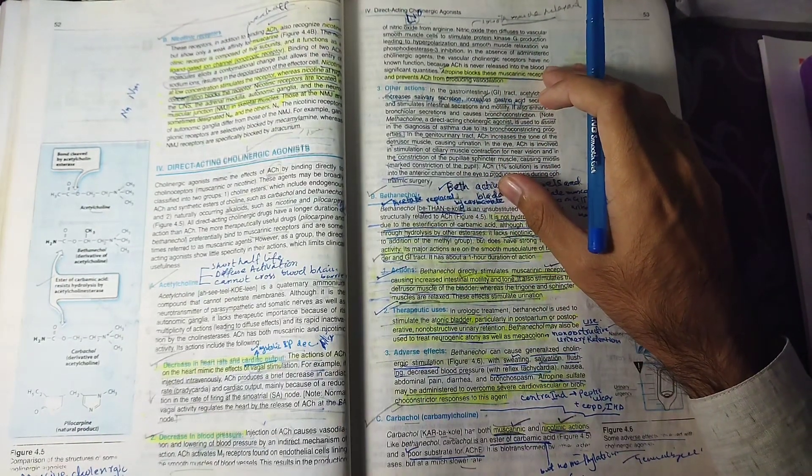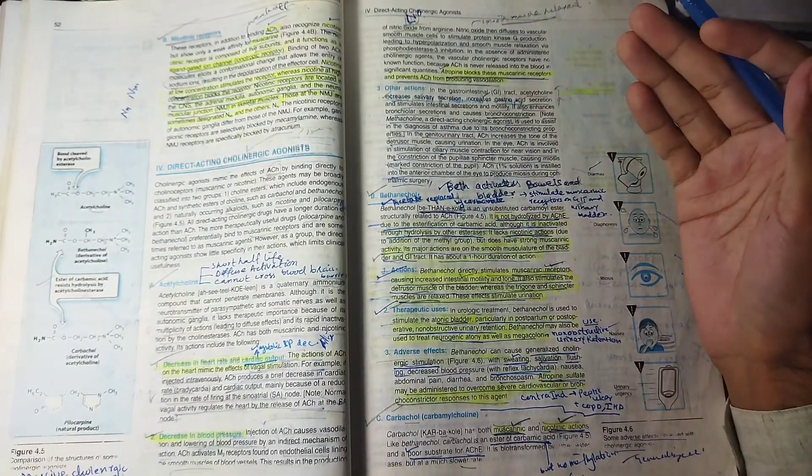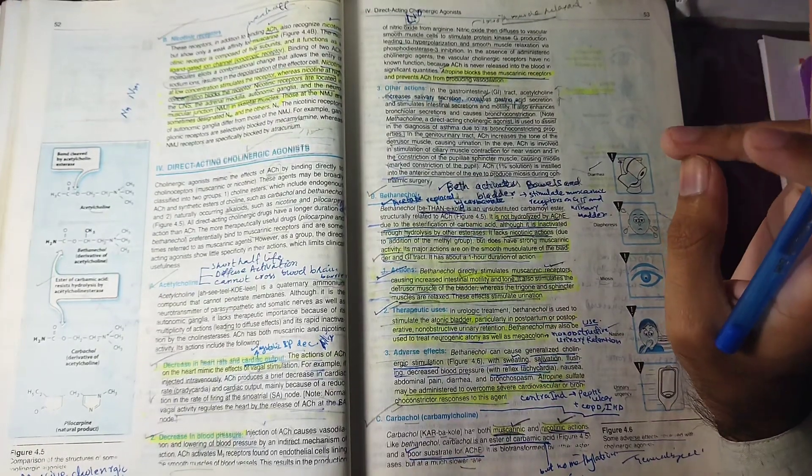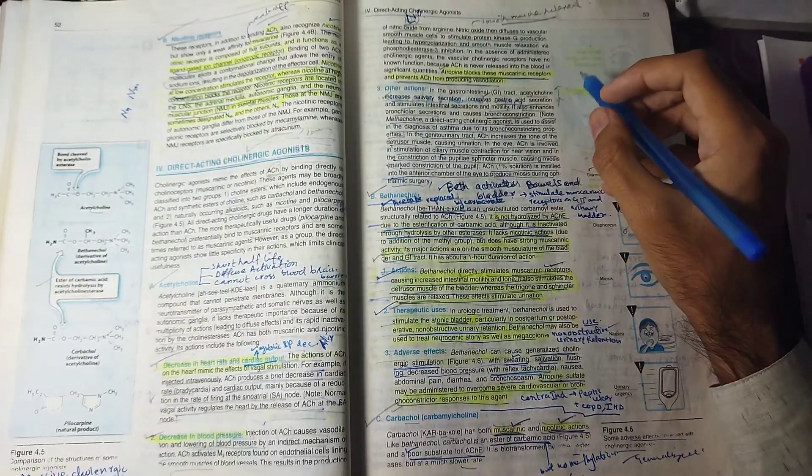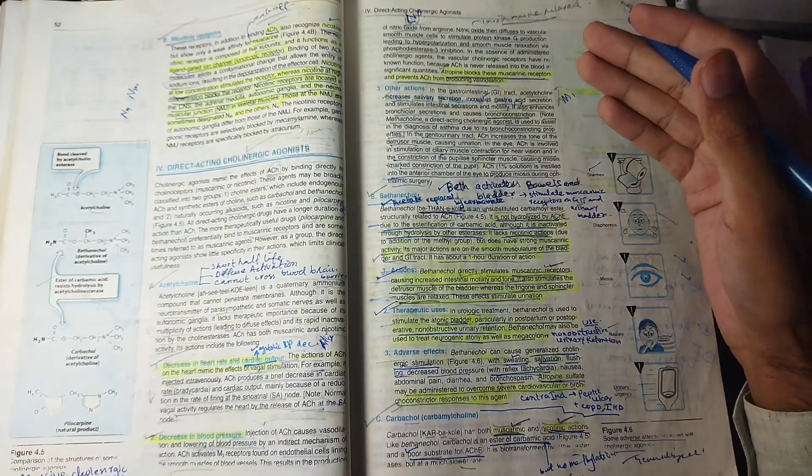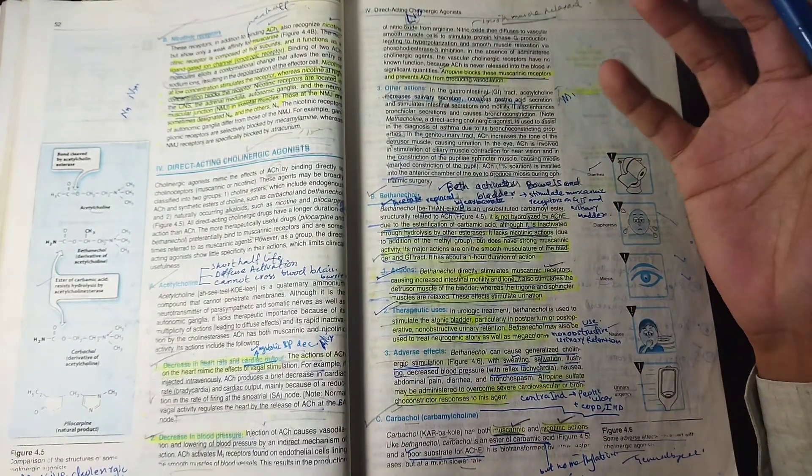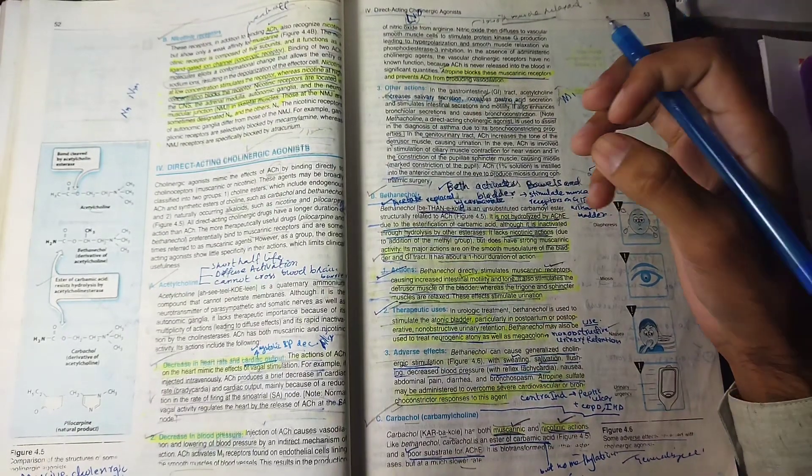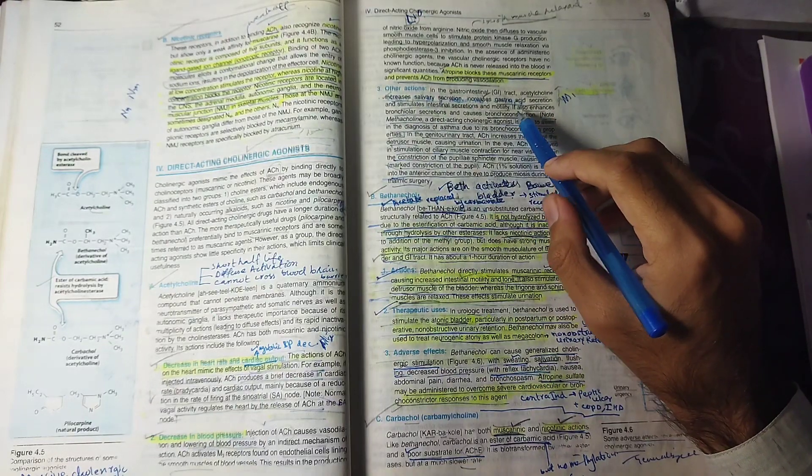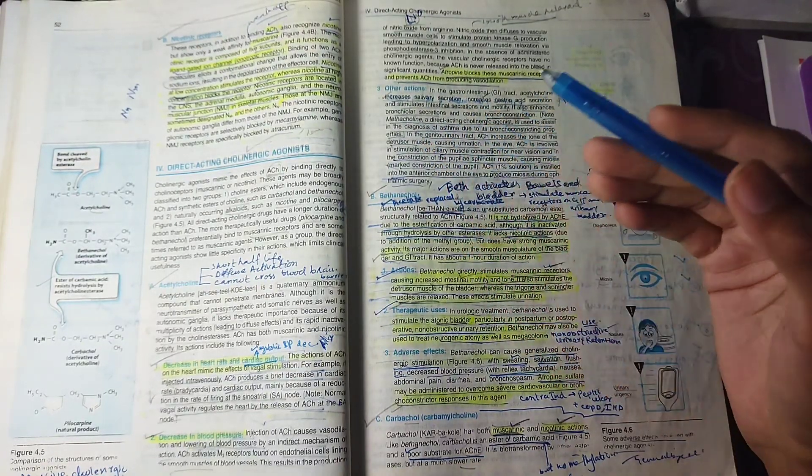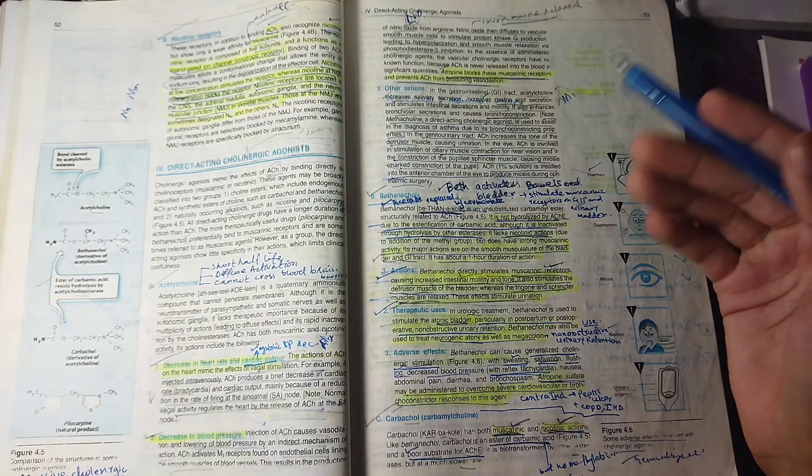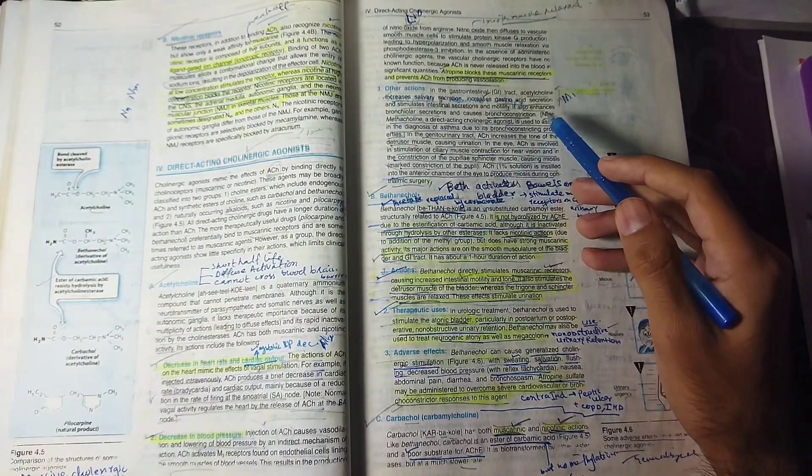After that, other generalizations are described. For example, acetylcholine will increase salivary secretion and gastric secretion. Bronchial secretion will increase. He's giving an example that acetylcholine causes bronchoconstruction, and we use acetylcholine directly to diagnose asthma due to its bronchoconstruction properties.